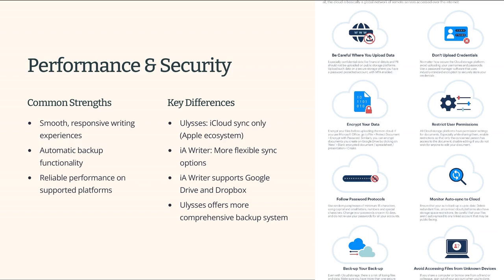Both IA Writer and Ulysses perform well, offering smooth and responsive writing experiences. They both provide automatic backup features, ensuring your work is safe. Ulysses uses iCloud for syncing, which is secure but limited to Apple devices. IA Writer, however, offers more flexibility with the ability to sync via Google Drive and Dropbox, in addition to iCloud.